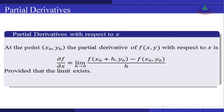Dear students, first of all we define partial derivatives. With respect to x, at the point (x₀, y₀), the partial derivative of f(x, y) with respect to x is: ∂f/∂x = lim(h→0) [f(x₀+h, y₀) − f(x₀, y₀)] / h,